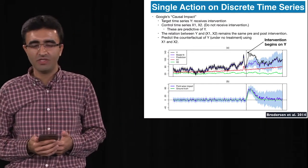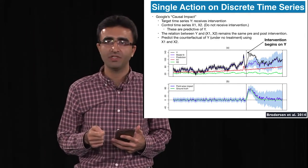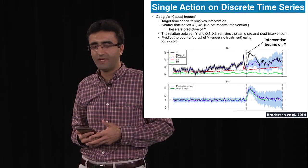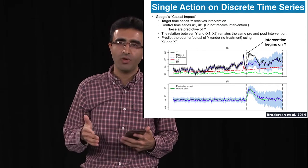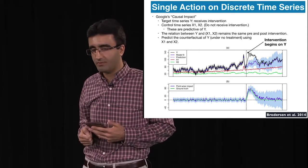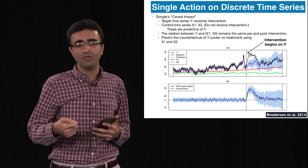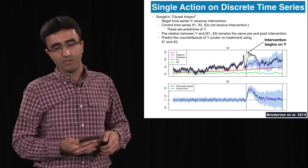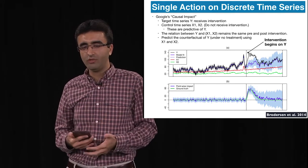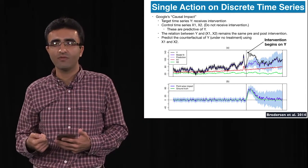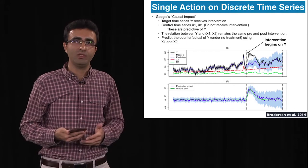Another interesting paper by Brodersen et al. estimates the effect of a single discrete-time intervention on a time series. They have a target time series Y that they observe — shown as the black line — at some point an intervention begins. They also have surrogate time series X1 and X2 with no intervention, which they use to predict Y and estimate the counterfactual of Y under no treatment — that is, what the time series would have looked like after the intervention begins if there had been no intervention.